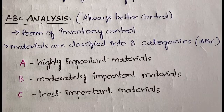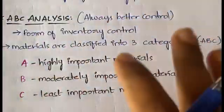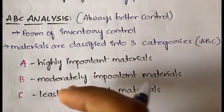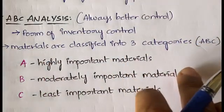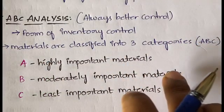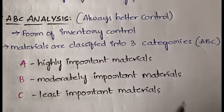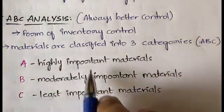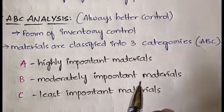First comes ABC analysis. ABC stands for Always Better Control. It is one of the techniques of inventory control. Here you classify materials into three categories. In ABC, A stands for highly important materials, B stands for moderately important materials, and C stands for least important materials.